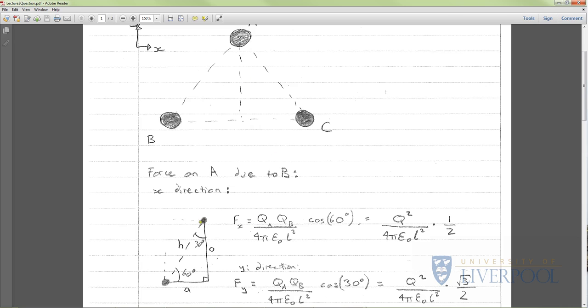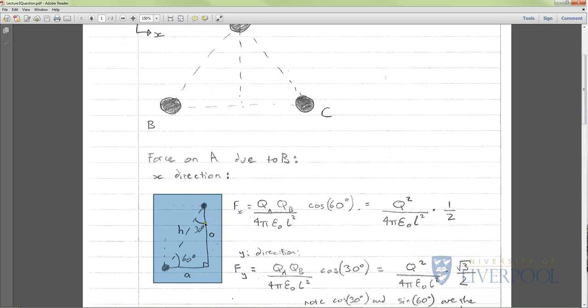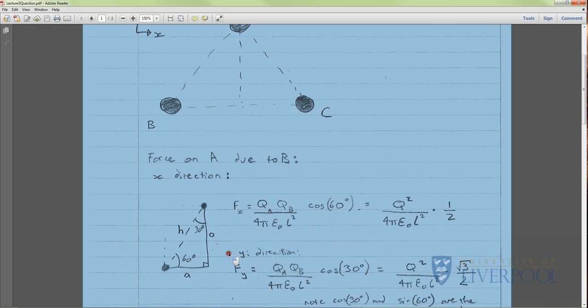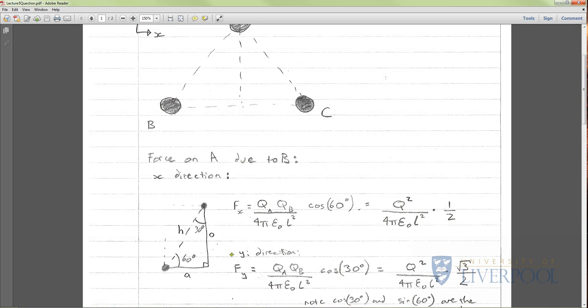Here I've drawn the section we're interested in. This is charge B and this is charge A. The hypotenuse length L, and it was set up in the question that it was an equilateral triangle so we know this angle is 60, and because this is a right angle this must be 30. Looking in the x direction, the force in the x direction is the magnitude that we originally had multiplied by cos 60. Cos 60 is equal to one-half so that actually simplifies things. The force on A due to B is Q² over 4πε₀L² times a half in the x direction.